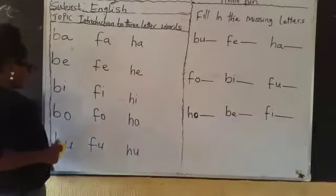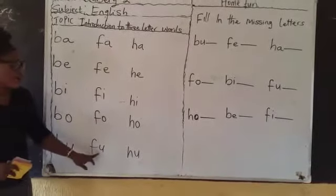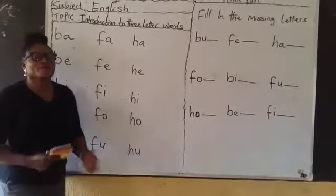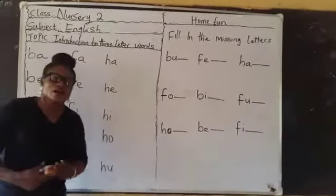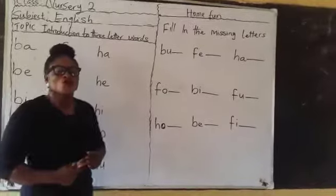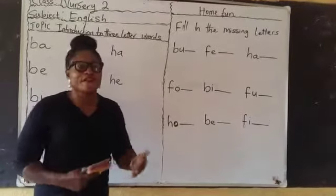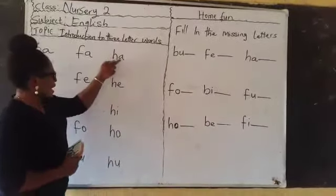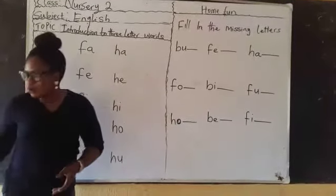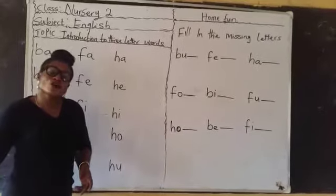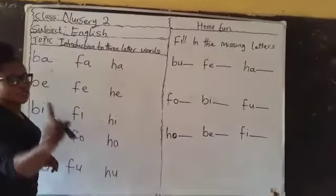Umbrella. We have fu. We have bu. We have fu. And we have hu. So these are the 2-letter sounds we have learned before, using the consonants to blend with the 5 vowel sounds we have — that is a, e, i, o, u. So today we are going to add consonants to have 3-letter words.